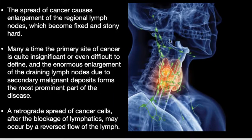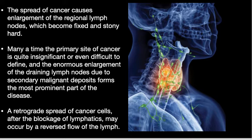The spread of cancer causes enlargement of the regional lymph nodes, which become fixed and stony hard. Many times the primary site of cancer is quite insignificant or even difficult to define, and the enormous enlargement of the draining lymph nodes due to secondary malignant deposits forms the most prominent part of the disease. A retrograde spread of cancer cells after blockade of the lymphatics may occur by reversal of lymph flow.